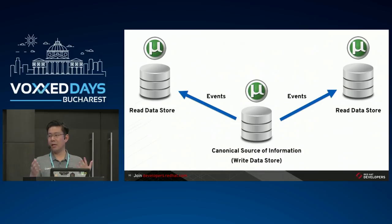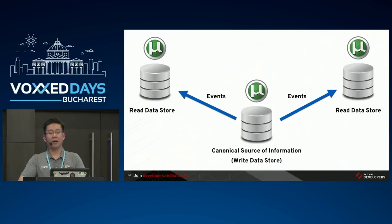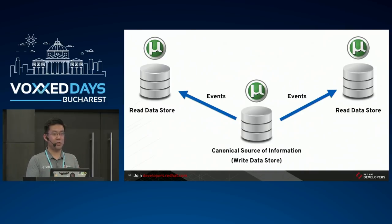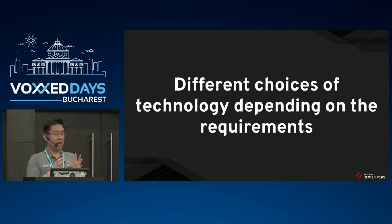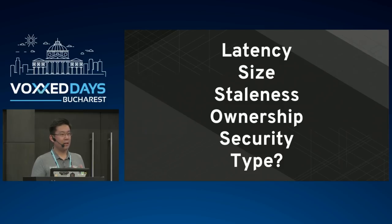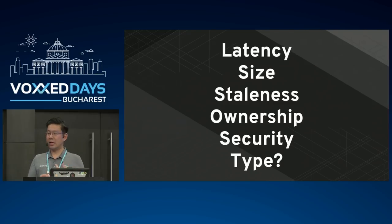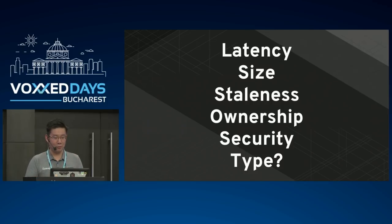We're going to discuss requirements you might have for distribution and technology choices for each. Different technology choices depend on requirements - and these requirements might be: latency, size, staleness, ownership, security, and time. I put a question mark there because I don't have a good name for this kind of requirements yet - maybe somebody can give me a better one.